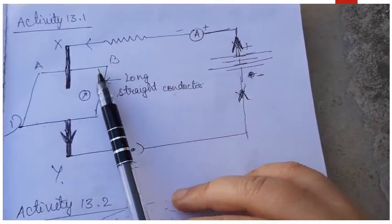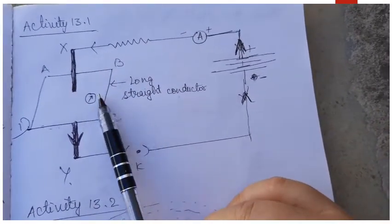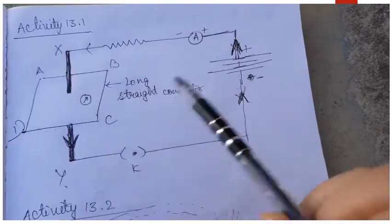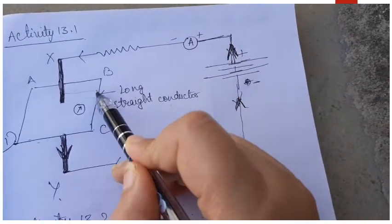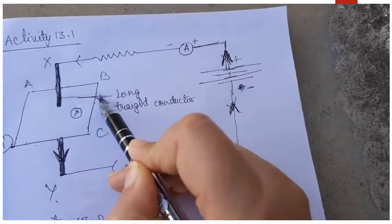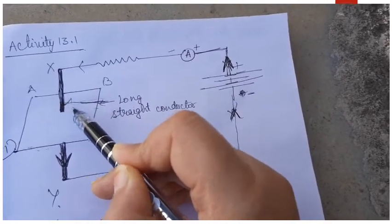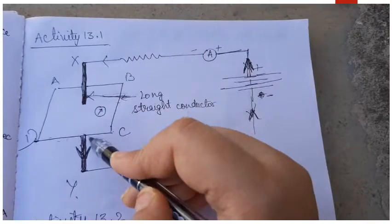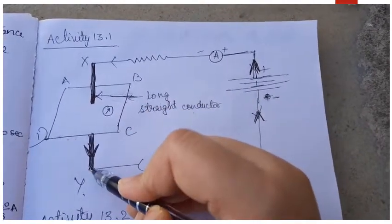Activity 13.1 from the NCERT. In this activity you have to take a long straight conductor, this is the long straight conductor that we are considering here, and you have to make it pass through a cardboard like this.